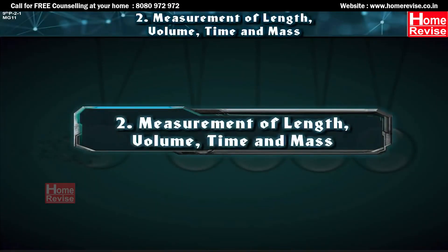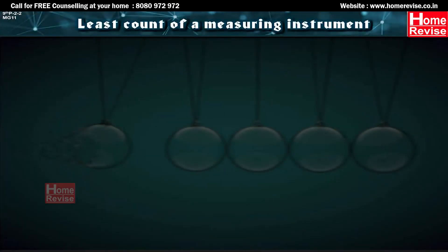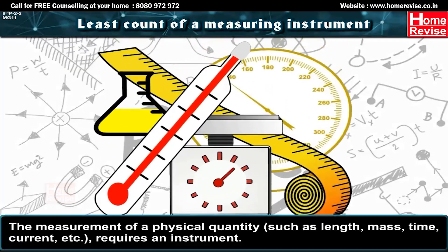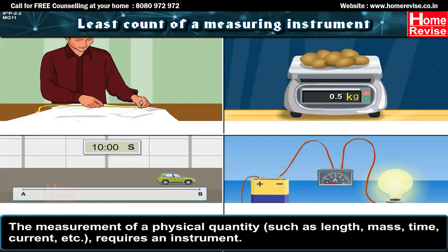Chapter 2: Measurement of Length, Volume, Time and Mass. Least Count of a Measuring Instrument. The measurement of a physical quantity such as length, mass, time, current, etc. requires an instrument.